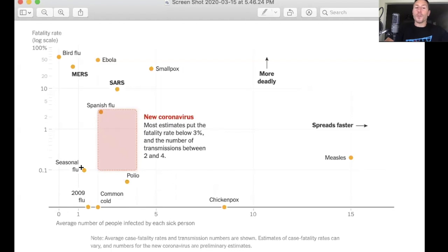The seasonal flu is about 0.1%. The common cold is essentially slightly more than zero. The 2009 flu is slightly more than zero. Polio is less than the seasonal flu, less than 0.1 on the y-axis here. The Spanish flu was pretty high, about 3-4%. So as you can see in this graphic...